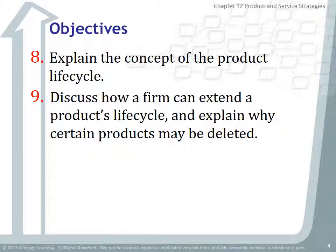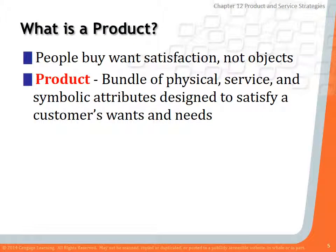So exactly what is a product? A product, as defined by the book, is a bundle of physical, service, and symbolic attributes designed to satisfy a customer's wants and needs. Typically we think of a product as having to be tangible, but it also can be something that's not tangible — something you can't touch or feel. The key thing is it has to meet a person's need or want in the marketplace.